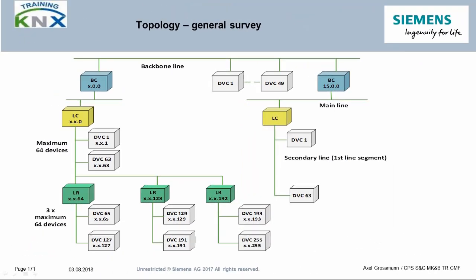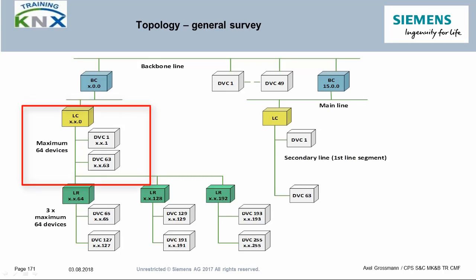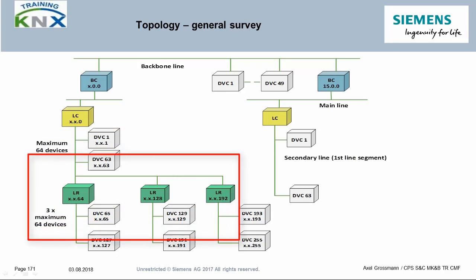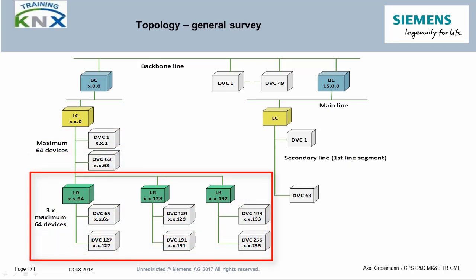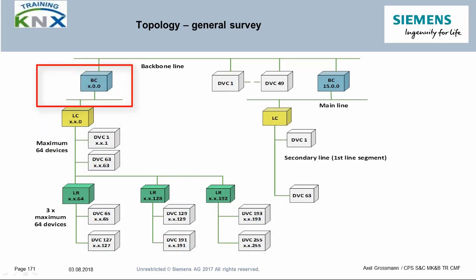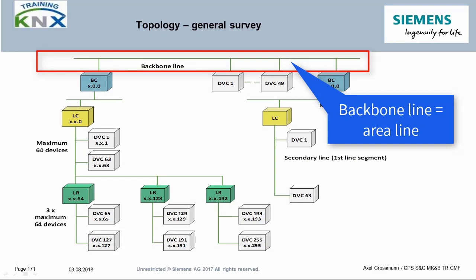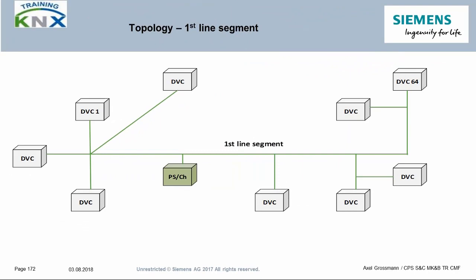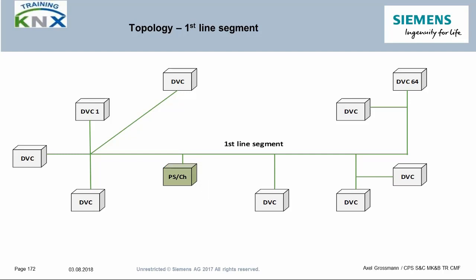As a reminder, the KNX topology is split into three levels. The lowest level is that of the sublines. Each subline can consist of up to four segments, whereby three segments must be connected in parallel. The next higher level is the area. Above it there is the area line which links all areas to each other. Area lines are also called backbone line. A KNX project always starts with the first segment of a subline. Each subline must be operated with a special power supply in which a choke is integrated to prevent short circuit of the information AC voltage due to the DC voltage stabilization.